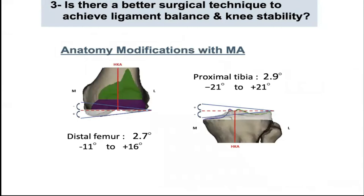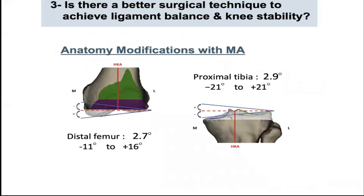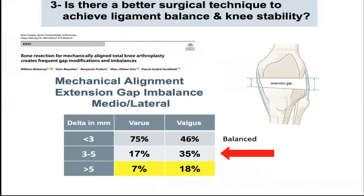The mean anatomical modification with mechanical alignment on the distal femur and proximal tibia was very near to 3 degrees. However, there was a wide range on both sides, and these extreme anatomical changes may be the problematic cases. Simulating the mechanical alignment bone resection on lower limb CT scans for patients undergoing patient-specific instruments total knee arthroplasty might have created extension gap imbalances of more than 5 mm in 7% of varus knees and in 18% of valgus knees. Surgeons may not be able to correct these imbalances and consequently end up with instability.